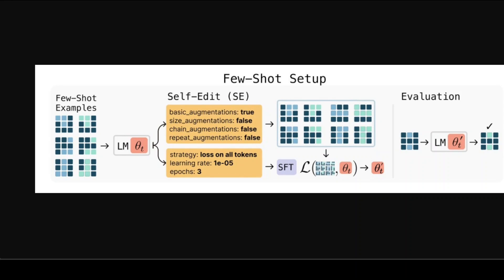The second application is few-shot learning, using tasks from the ARC dataset - these are visual reasoning puzzles that require understanding patterns from just a few examples. Here SEAL learns to configure the entire adaptation pipeline. Instead of just generating training data, it also decides on optimization hyperparameters like learning rate, number of training epochs, and which types of data augmentations to use. The model might decide to use basic augmentations but skip size modifications, set the learning rate, and train for three epochs. Each configuration gets tested and the model learns which combinations work best for different types of reasoning tasks. This is quite powerful because traditional approaches use the same fixed settings for all tasks, but SEAL can customize the adaptation strategy for each specific problem.